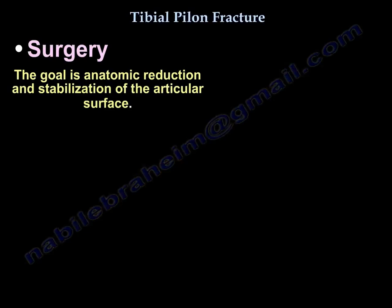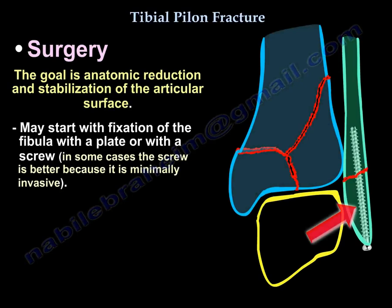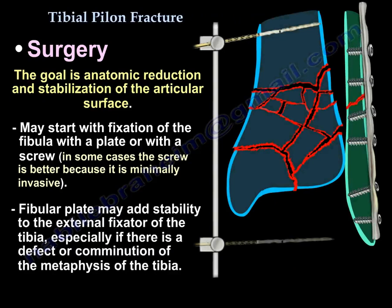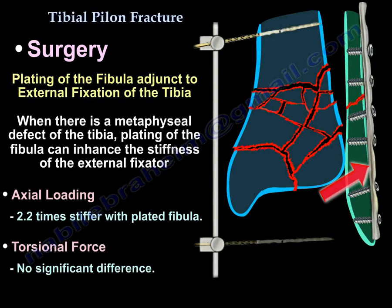Surgery: The goal is anatomic reduction and stabilization of the articular surface. You may start with fixation of the fibula with a plate or with a screw; in some cases the screw is better. A fibular plate may add stability to the external fixture of the tibia, especially if there is a defect of the metaphysis. Plating of the fibula can enhance the stiffness of the external fixture when there is a metaphyseal defect.